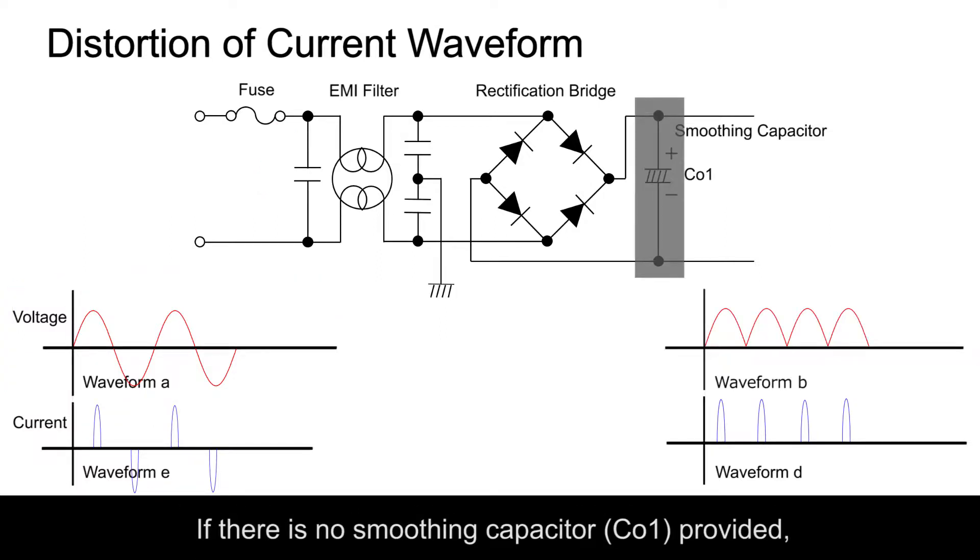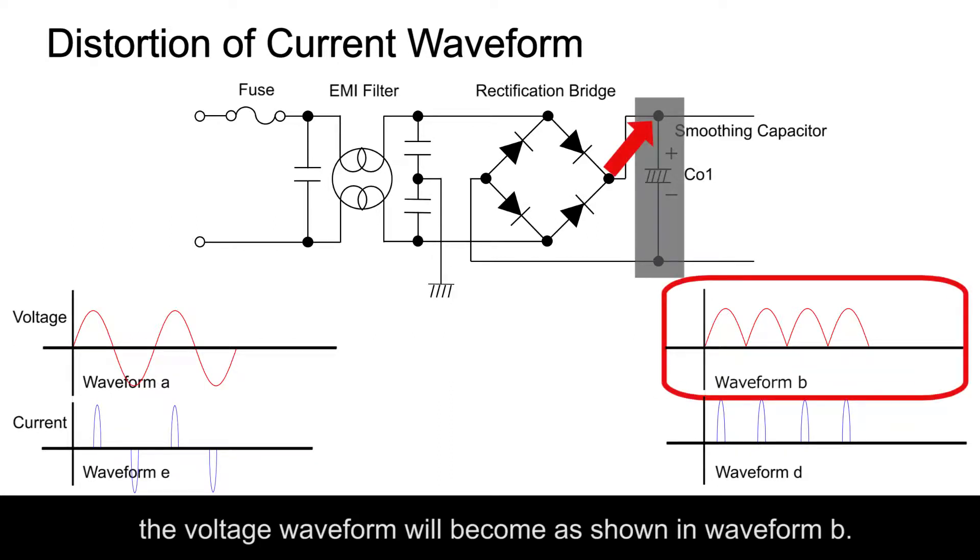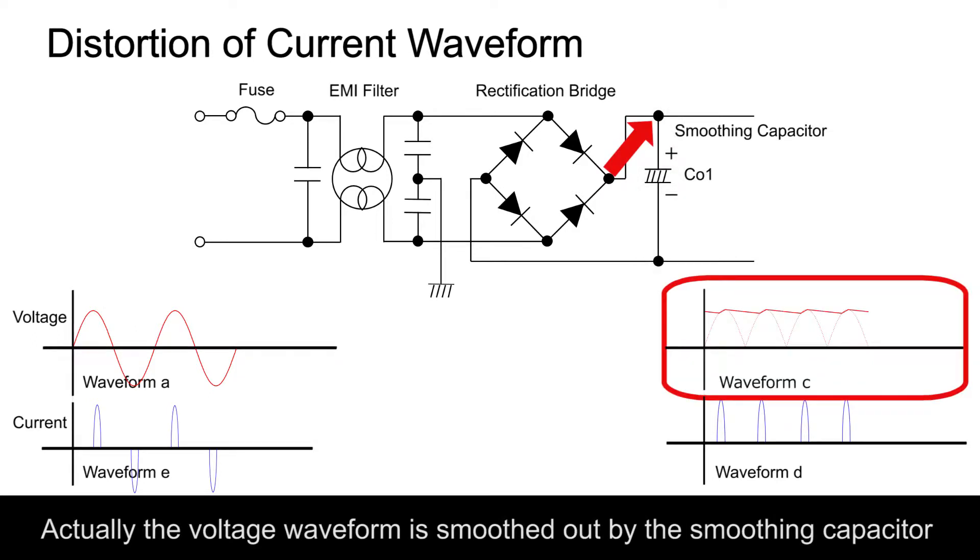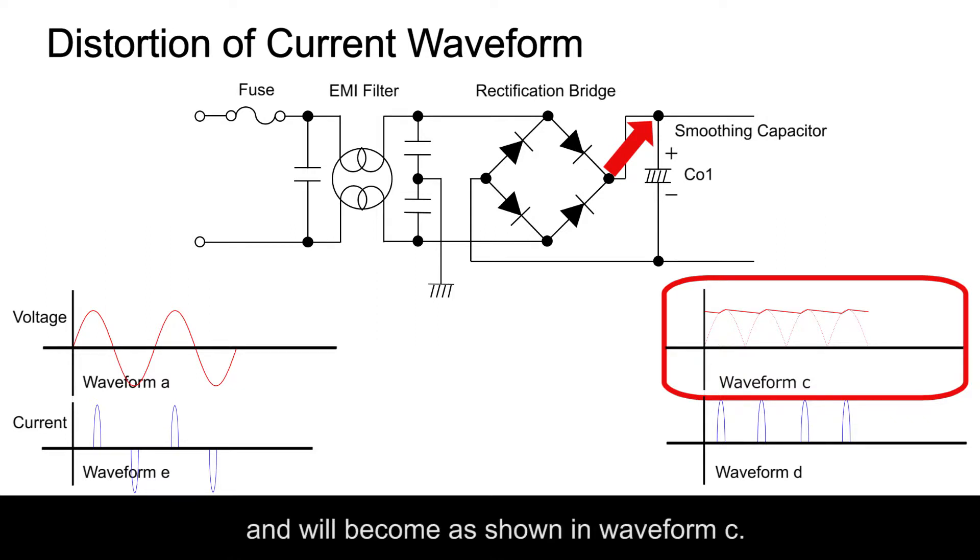If there is no smoothing capacitor CO1 provided, the voltage waveform will become as shown in waveform B. Actually, the voltage waveform is smoothed out by the smoothing capacitor and will become as shown in waveform C.